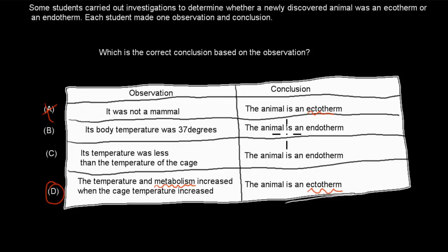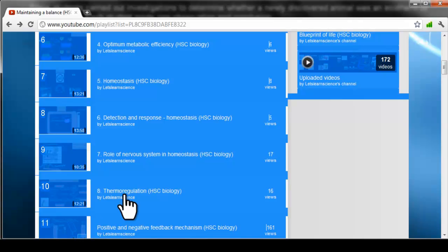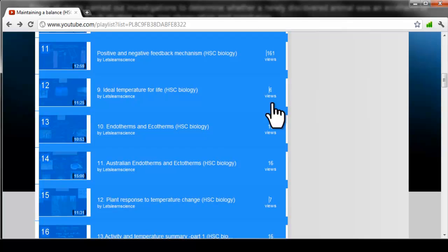C is also incorrect — if the body temperature is less than the cage temperature, the animal could be hiding or something else could explain it, so we can't confirm it's endothermic. D is correct: when external temperature increases, internal temperature and metabolism increase — this is characteristic of an ectotherm. This question relates to homeostasis and endotherm/ectotherm content from videos 10 and 11.